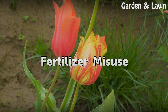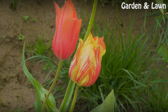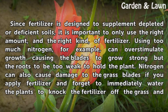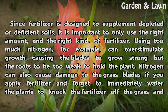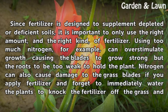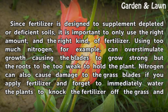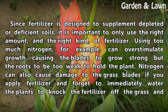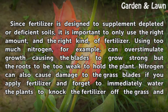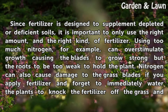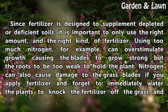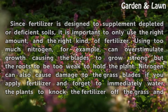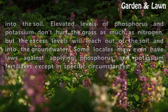Since fertilizer is designed to supplement depleted or deficient soils, it is important to only use the right amount and the right kind of fertilizer. Using too much nitrogen, for example, can overstimulate growth, causing the blades to grow strong but the roots to be too weak to hold the plant. Nitrogen can also damage the grass blades if you apply fertilizer and forget to immediately water the plants to knock the fertilizer off the grass and into the soil.